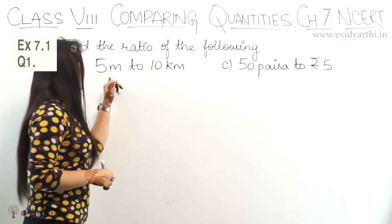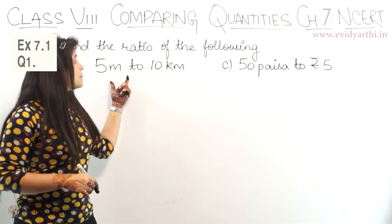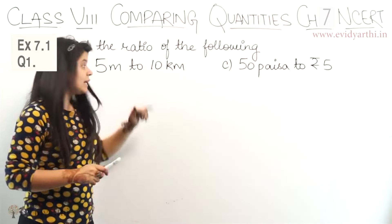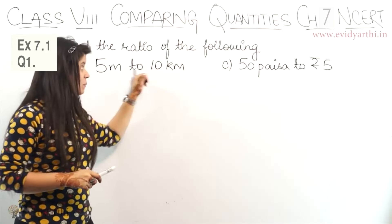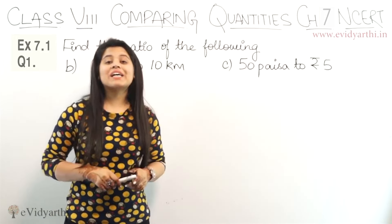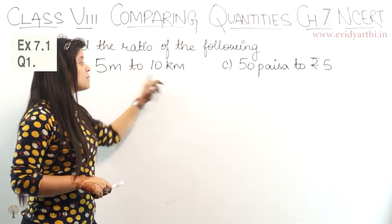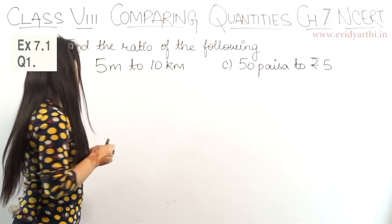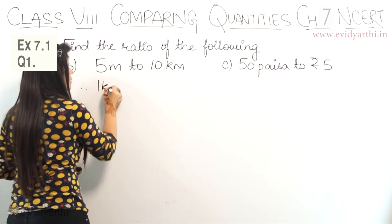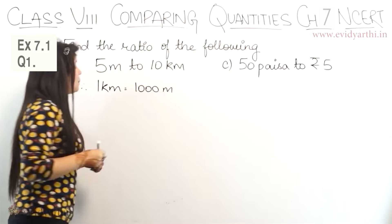Now the B part says 5 meters to 10 km. Here the quantities are different — one is in meters and one is in kilometers. If the quantities are different, we cannot find the ratio directly, so we need to convert them to the same unit. We know that 1 kilometer is equal to 1,000 meters.